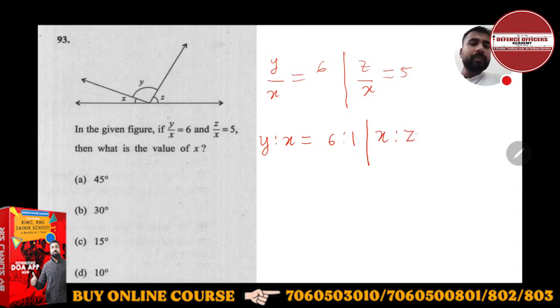And z is to x is equal to 5 is to 1, or x is to z will be 1 is to 5. Now, if you merge them, you will find that y is to x is to z will be 6 is to 1 is to 5.